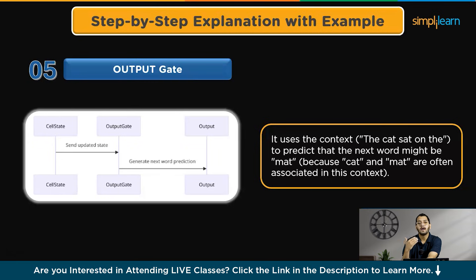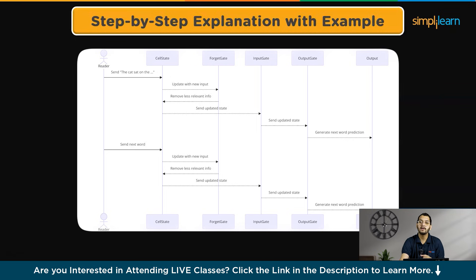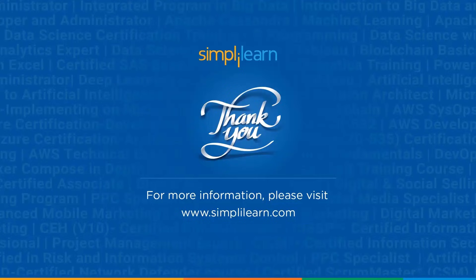There are many applications where you can use LSTMs to predict time series or the next word in a sentence. By using the LSTM gates — input gate, forget gate, and output gate — and updating the cell state, the network can predict the next word in a sequence by maintaining relevant context and discarding unnecessary information. This step-by-step process allows LSTM networks to effectively handle sequences and make accurate predictions based on context. If you have any questions or doubts, please ask in the comment section below. Thank you and keep learning with SimpliLearn.